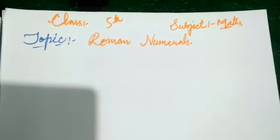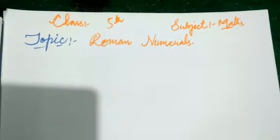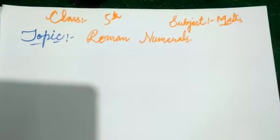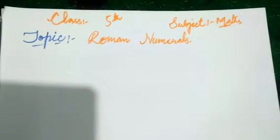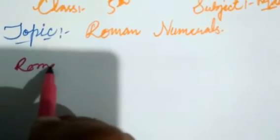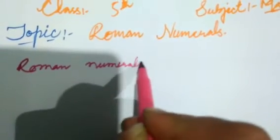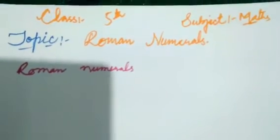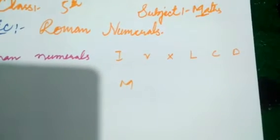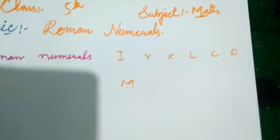Assalamu alaikum dear students, hope you all are doing well. Today we will do Exercise 1e. This exercise is based on Roman numerals. As you know, there are seven basic symbols to write in Roman numerals. The basic seven symbols are I, V, X, L, C, D, and M.